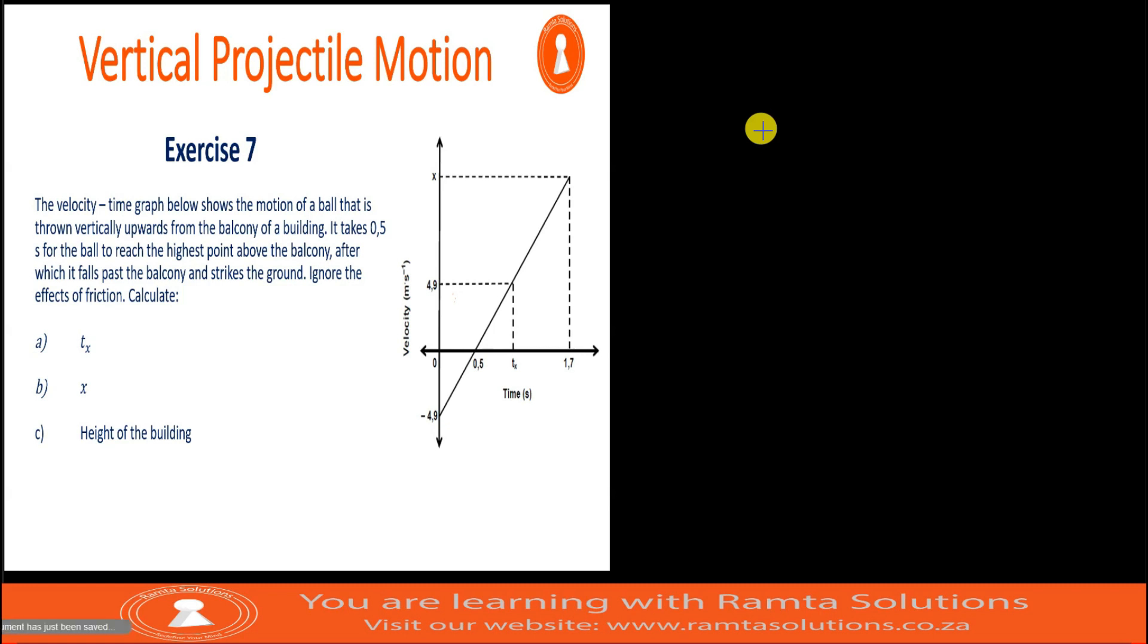Today, as we continue with our lesson on vertical projectile motion, we're looking at example 7 that says the velocity time graph on the right shows the motion of a ball that is thrown vertically upwards from the balcony of a building. It takes 0.5 seconds for the ball to reach the highest point above the balcony, after which it falls past the balcony and strikes the ground.